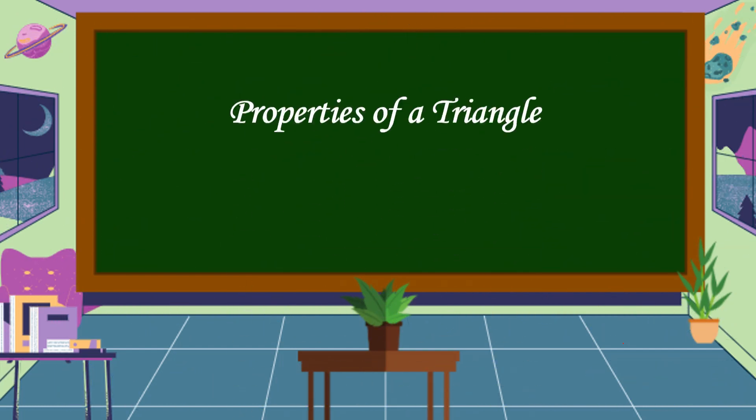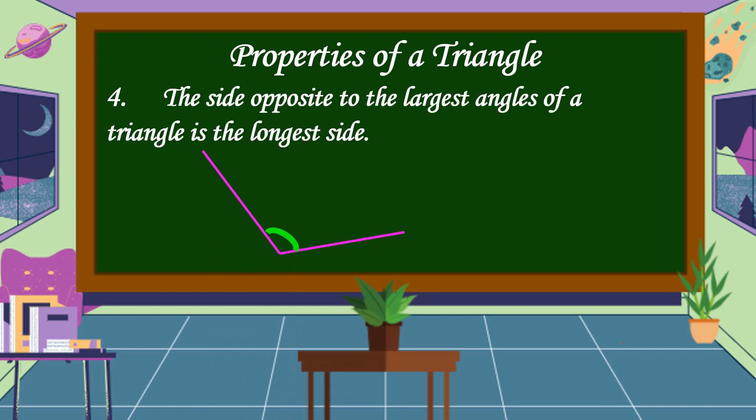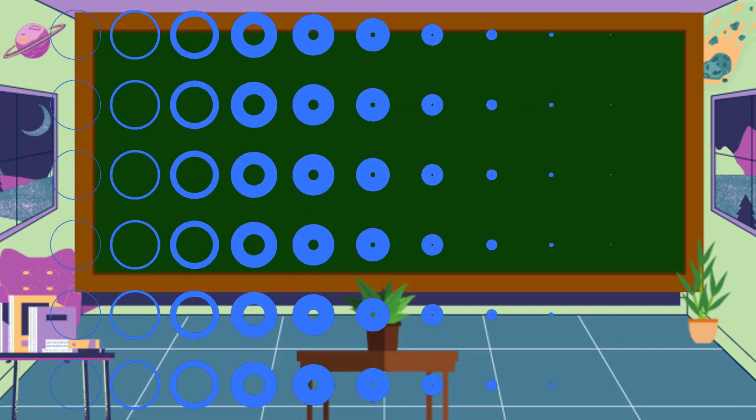The fourth property: the side opposite to the largest angle of a triangle is the longest side.